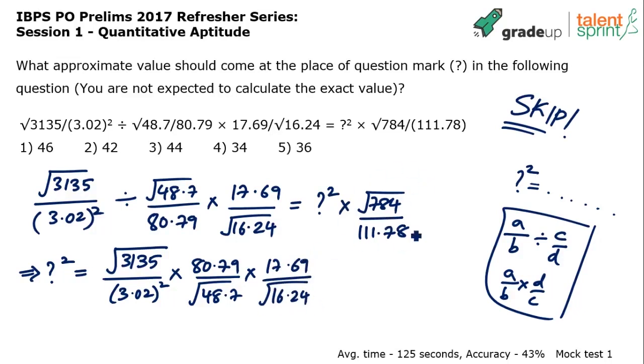And now, this particular fraction which is there on the question mark side has to be taken on the other side. So what do we do? 111.78 goes to the numerator. And square root of 784 comes in the denominator. That is it. Now, let me do the approximations.